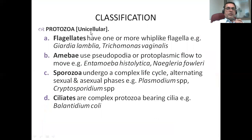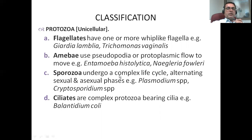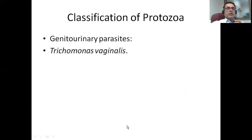Some examples of protozoa, the unicellular parasites: flagellates have one or more whip-like flagella, like Giardia lamblia or Trichomonas vaginalis. Amoebas use pseudopods or protoplasmic flow to move; examples include Entamoeba histolytica and Naegleria fowleri. Sporozoa undergo a complex life cycle, alternating sexual and asexual phases, like Plasmodium species and Cryptosporidium. Ciliates are complex protozoa bearing cilia, like Balantidium coli. You will learn about each of these in more detail later.